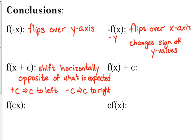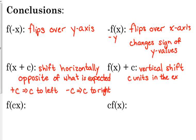So what happens if that plus c isn't with the x but is just stuck on the end of the function? It goes up on the y. Because f of x represents y, we are adding c units to all of our y values. So this is a vertical shift — c units in the expected direction. Adding c moves it up; minus c is down.